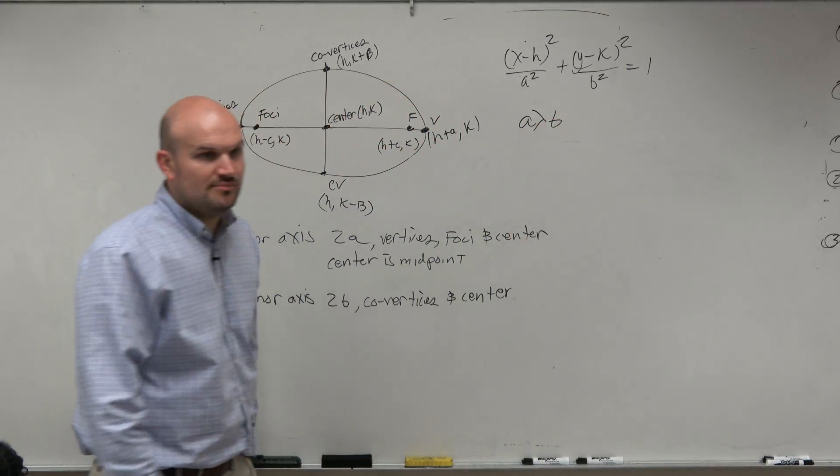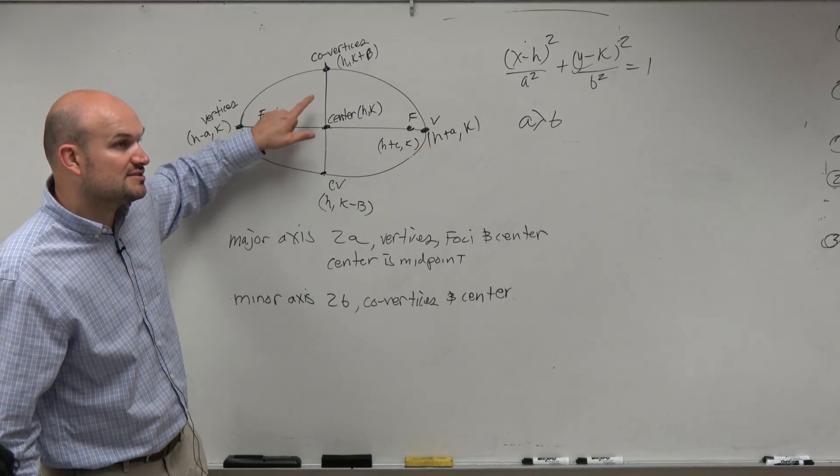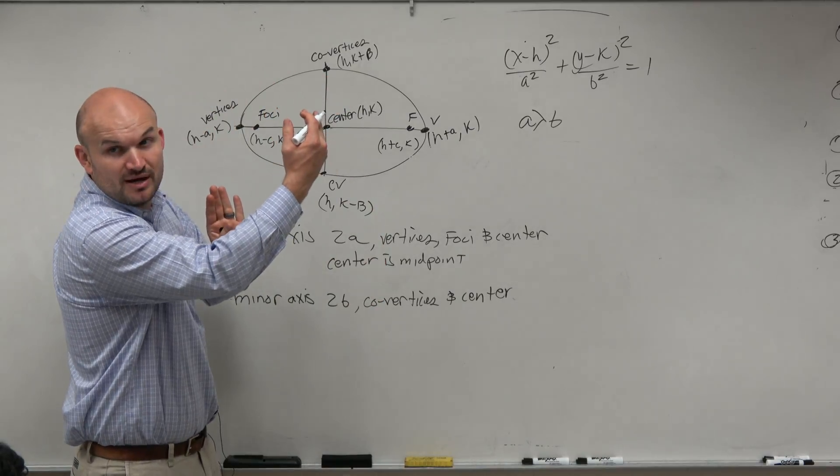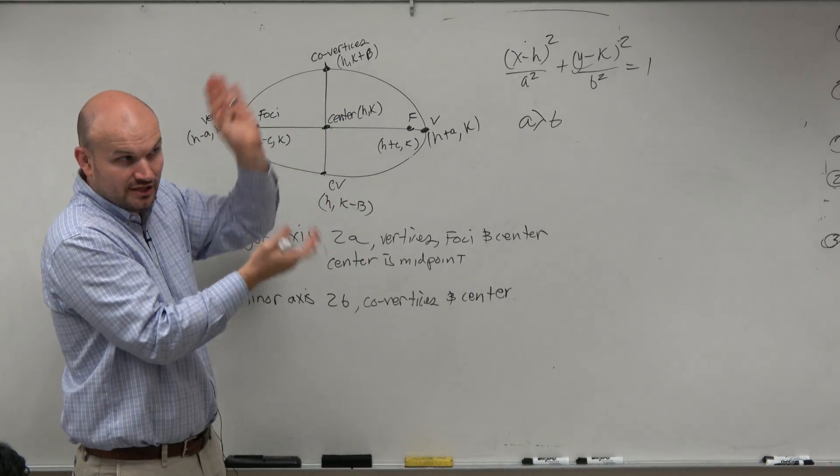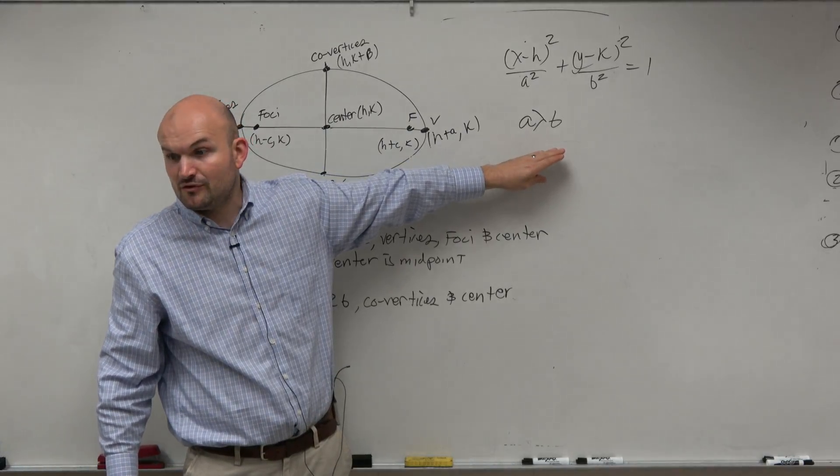So there's a couple things. A is always larger than b. The distance from the center to your vertices is always going to be larger than your distance from your center to your co-vertices. Now, again, guys, we could take this ellipse and flip it this way. Right? So it could do that vertically or horizontally. It doesn't really matter. But understand that a is always larger than b for an ellipse.